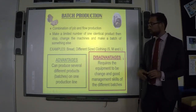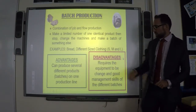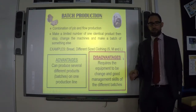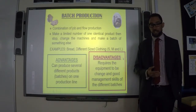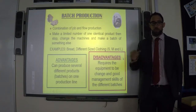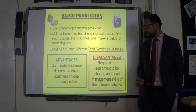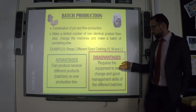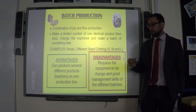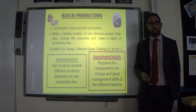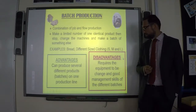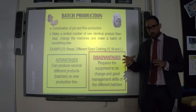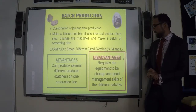Batch production is more flexible — it's a combination of job and flow. We can produce several different types of products. If it's a bakery, we can have many different styles of cake from the same machine — stop the machine, change it, and make a different type. However, the drawback is that in order to change to a different product, we have to stop the machine. When the machine is stopped, we aren't producing anything. It's also quite complex trying to run different machines in different batches at the same time.